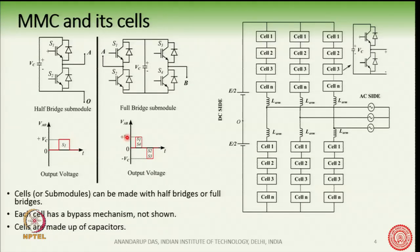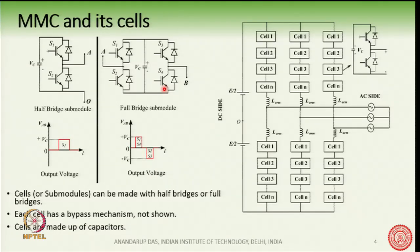For the full-bridge sub-module: turning on one diagonal pair gives +V_C, turning on the other diagonal gives −V_C, and turning on S1 and S3 or S2 and S4 gives 0 voltage at the output. So with half-bridge cells we get two voltage levels (0 and V_C), whereas with full-bridge cells we get three levels: +V_C, 0, or −V_C.